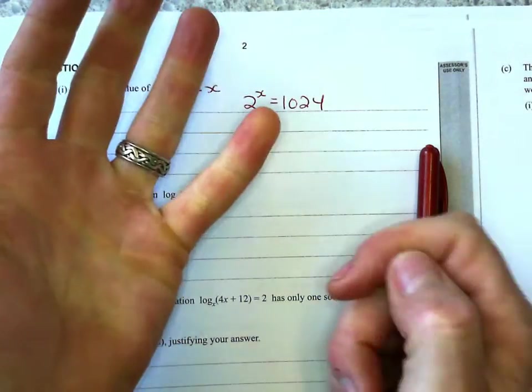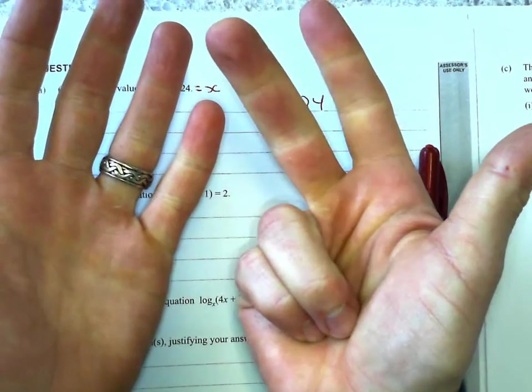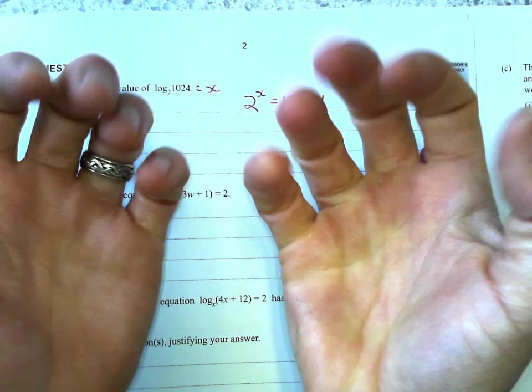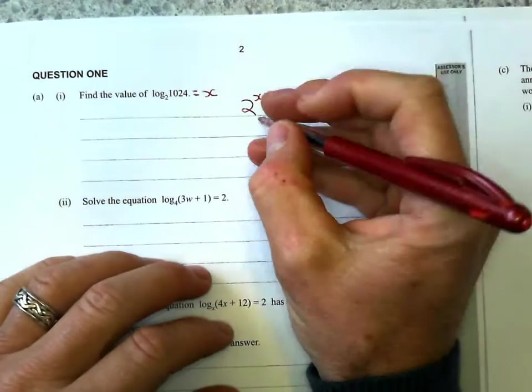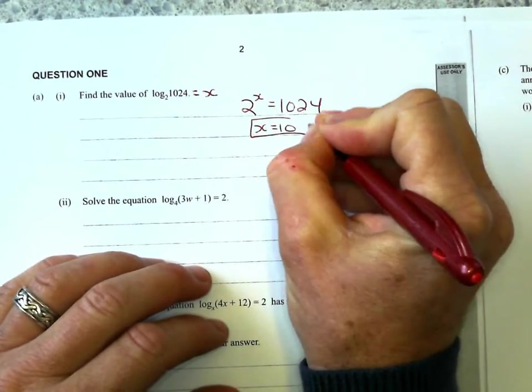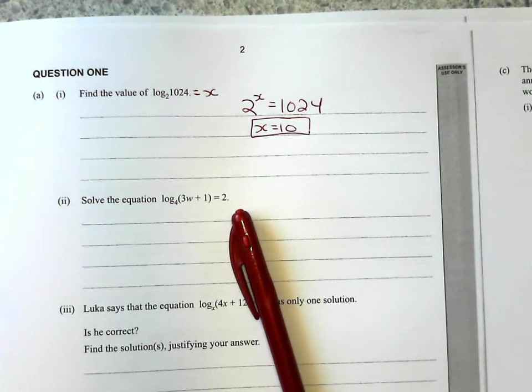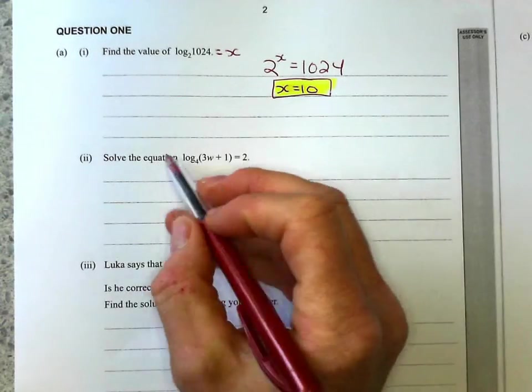2, 4, 8, 16, 32, 64, 128, 256, 512, 1024. So x is equal to 10, if you know your powers of 2 by heart, which we all should.